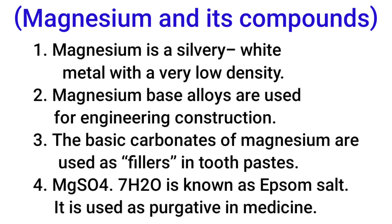Number 1: Magnesium is a silvery white metal with a very low density. Number 2: Magnesium-based alloys are used for engineering construction.